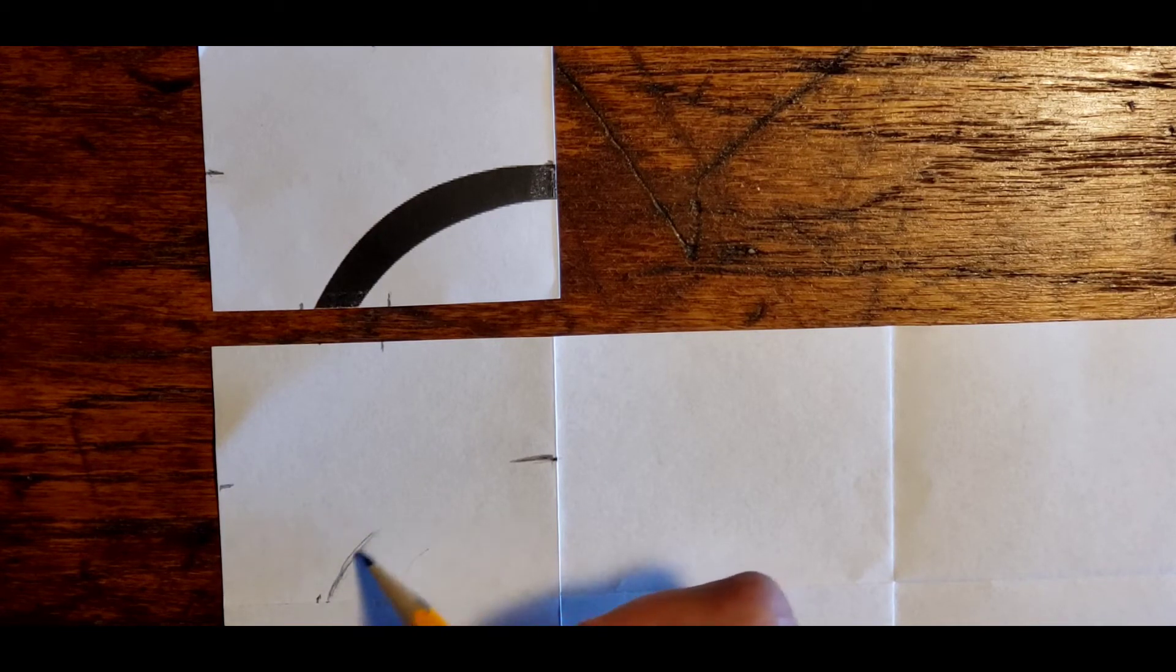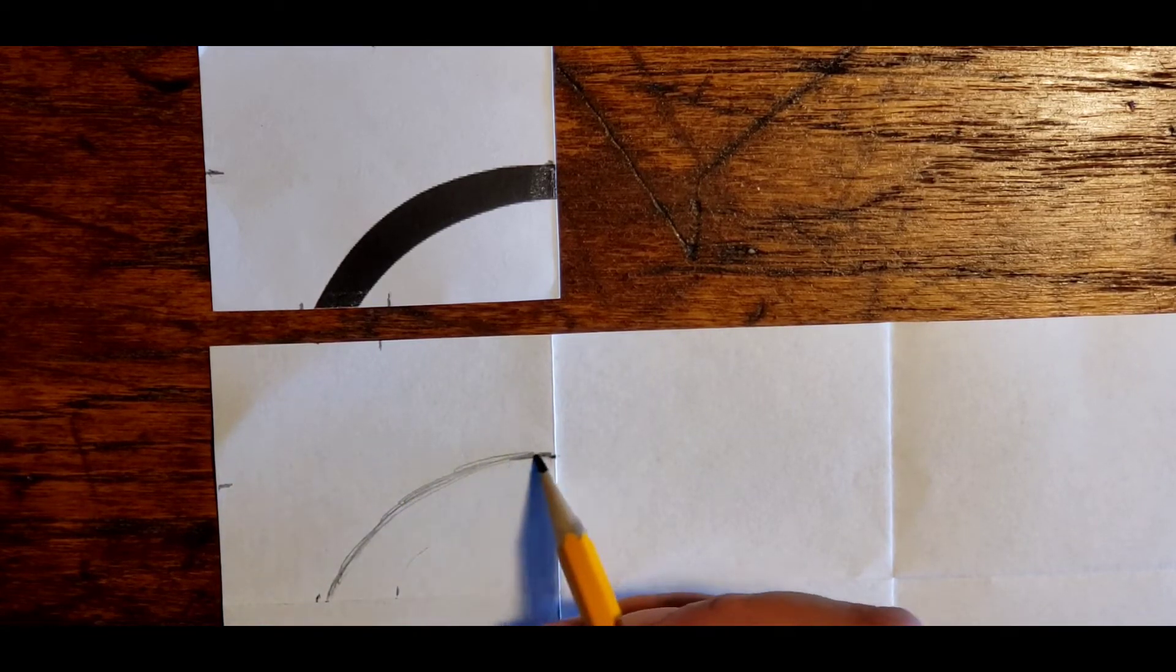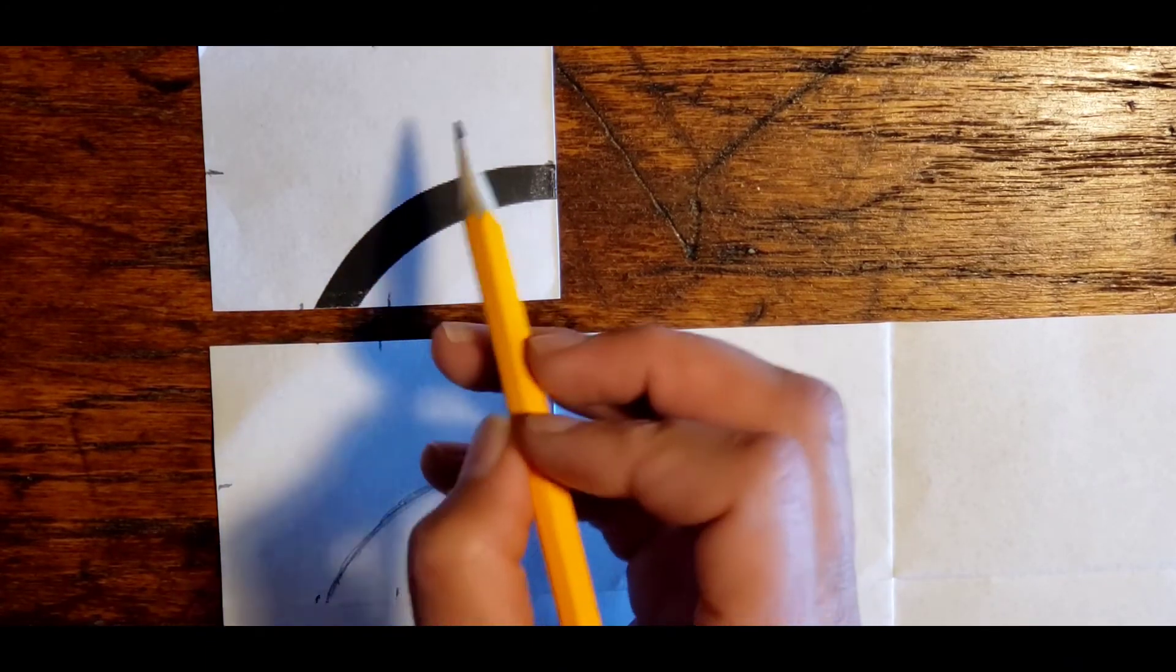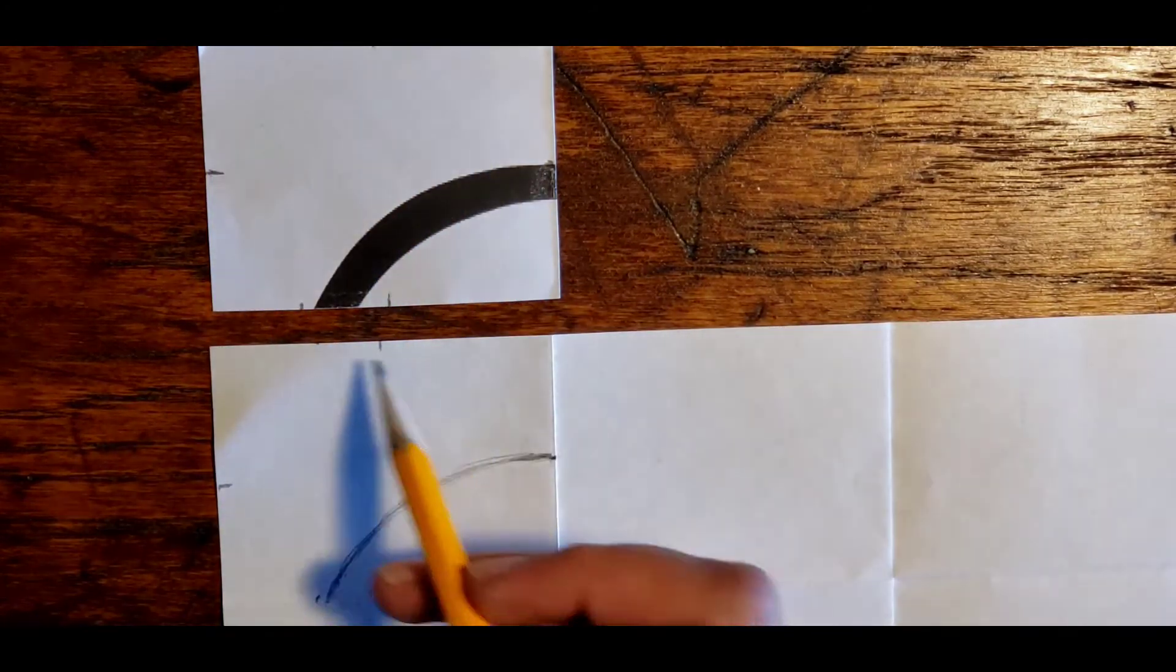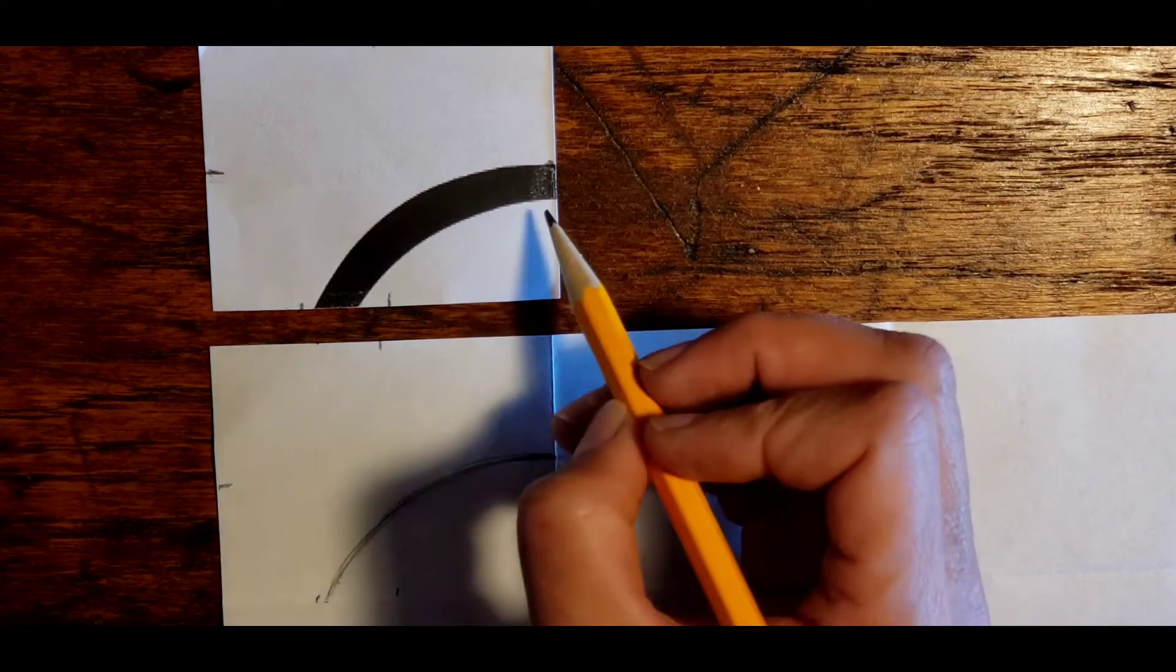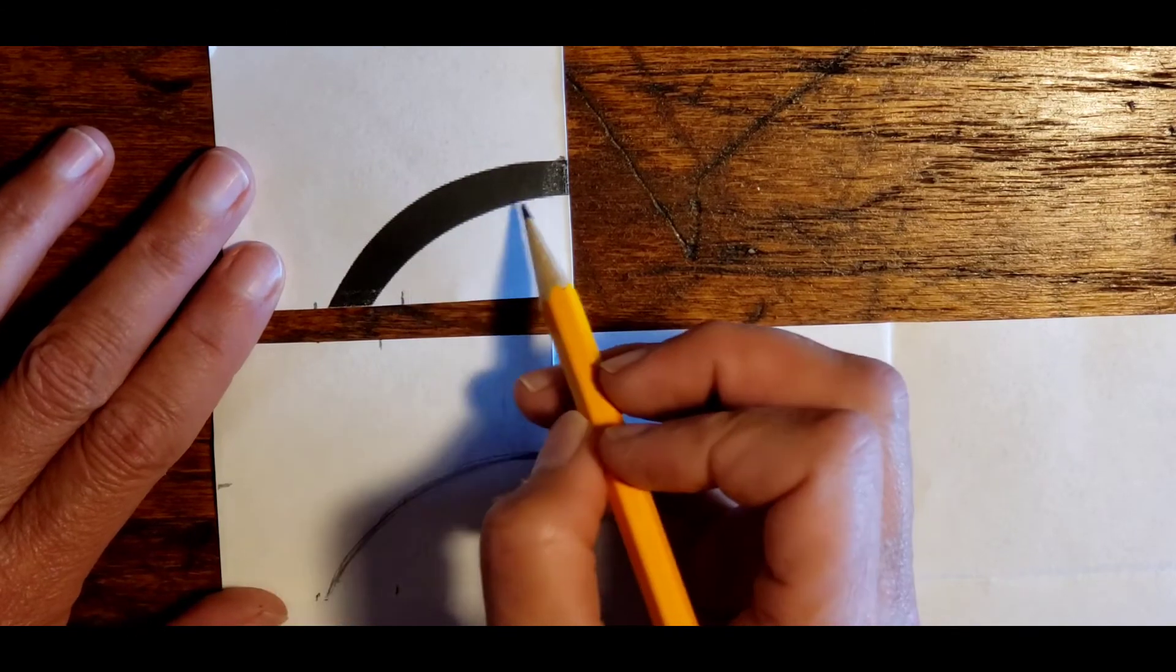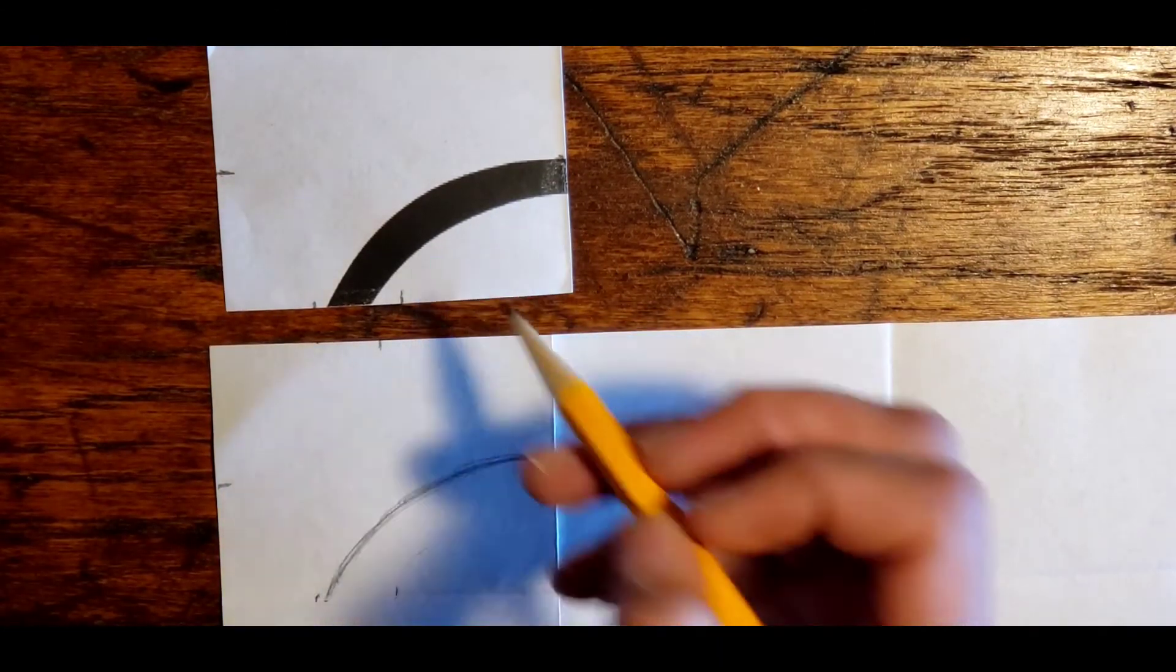I'm just going to go ahead and draw that lightly in. I'm even looking at the shape of the white space around my line. So does this match this? And I'm going to go ahead and draw in the bottom of this curve, this thick line that I'm seeing. I'm going to draw in that bottom line.